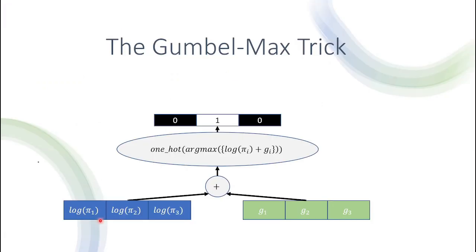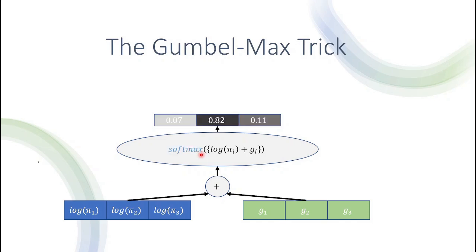Let's bring everything together through visualization. Our model generated three probabilities: pi_1, pi_2, and pi_3. We want a one-hot vector representing that the model sampled pi_2 as the highest probability. We take each of the log probabilities, add the Gumbel noise, then get the argmax value and generate the one-hot vector. However, argmax poses a problem because calculating the derivative is problematic. So we replace argmax with softmax, which is a smooth approximation of argmax. It generates not a one-hot vector, but numbers representing probabilities after being injected with the Gumbel noise, enabling training of our model.